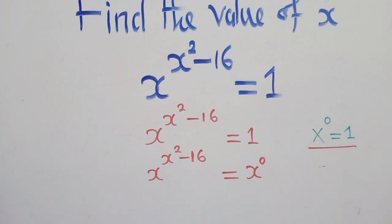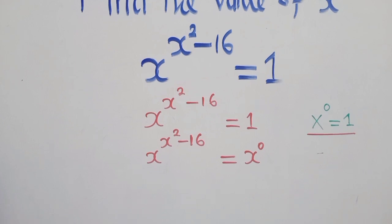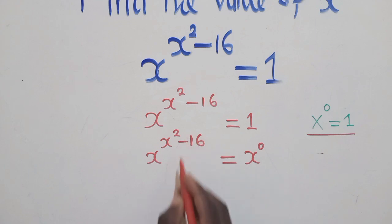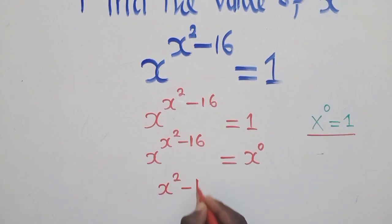So upon balancing the bases, I guess you can see that the bases are balanced. This one and this one. So we can go to the powers. We say x power 2 minus 16 is equal to 0.